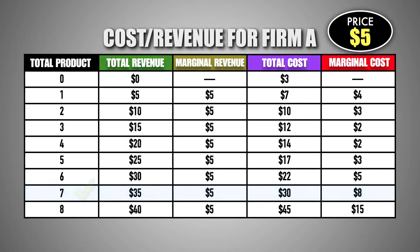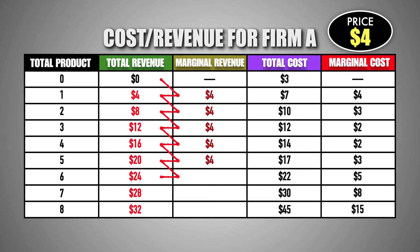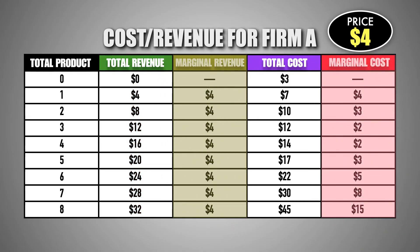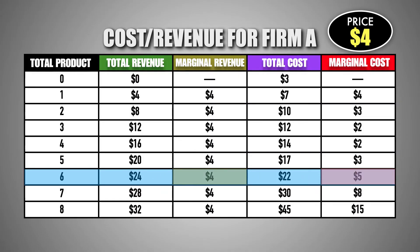Likewise, if the price of good M decreases to $4, each additional unit of good M produced by the firm will now generate a marginal revenue of $4. When comparing marginal revenue to the marginal cost of producing each unit, the firm now has a motive to produce less output. If the firm continued to produce six units, the marginal cost to produce the sixth unit would be $1 more than the marginal revenue it would generate for the firm, thus detracting from profits.